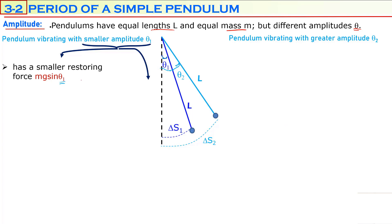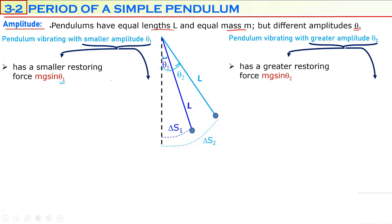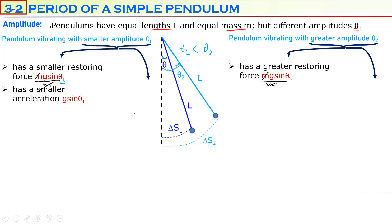Because theta-1 is less than theta-2, and the restoring force is mg sine theta with the same m and g, the pendulum with smaller amplitude has a smaller restoring force. Dividing by mass, mass simplifies, so the pendulum with smaller amplitude will have a smaller acceleration, g sine theta-1, while the pendulum with greater amplitude will have a greater acceleration, g sine theta-2.